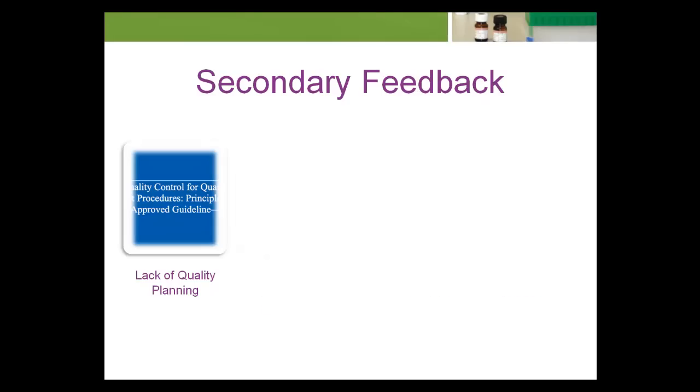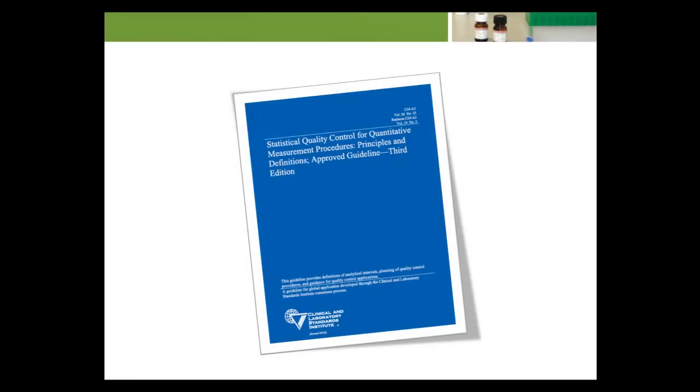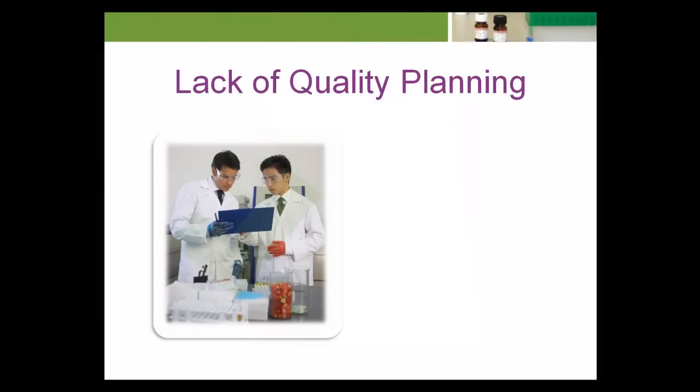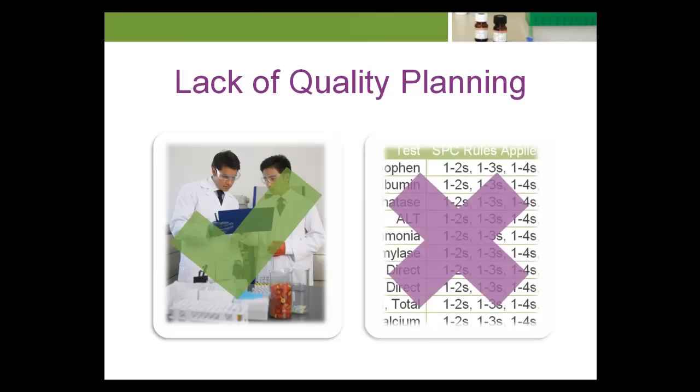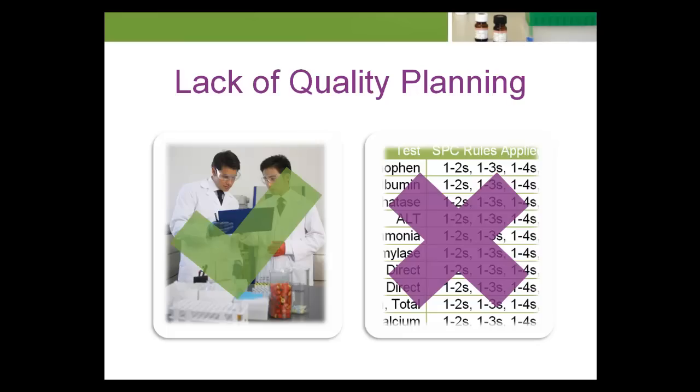As stated in this CLSI standard, the first step to planning an effective quality control procedure is to define the intended quality for a test. While laboratories will devote time ensuring a new instrument, kit, or method meets manufacturer claims, many do not plan for how much imprecision and bias is acceptable for a test. Consequently, such laboratories often set process control rules that intuitively may seem appropriate or reflect past experience, but inherently discount the technical aspects of the test that directly relate to analytical quality.